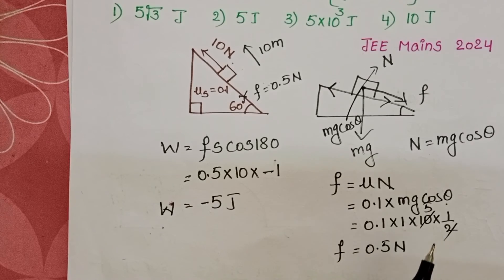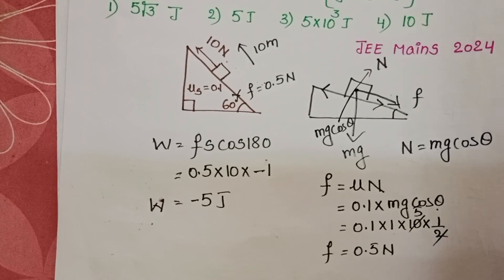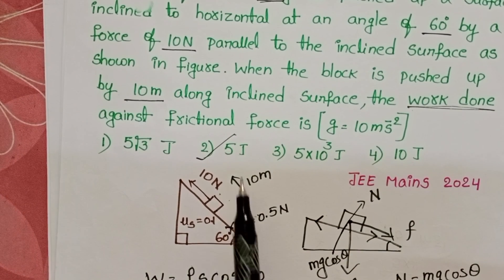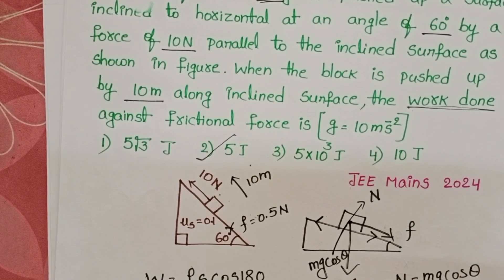In the options, there is no negative sign, so choose the second option, 5 joules. Work done against the frictional force is 5 joules. Second option is correct.